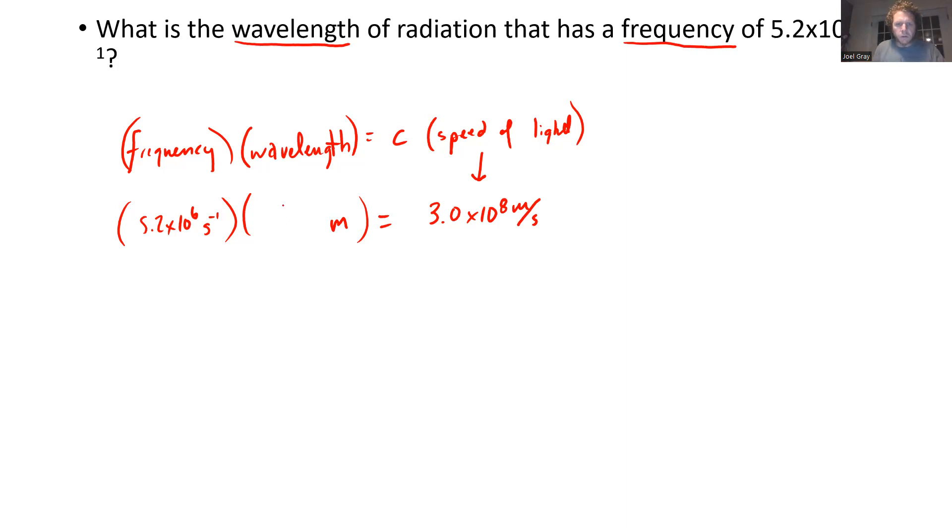So what we want to do, I'm going to go ahead and plug in lambda for my wavelength there. All that I'm going to do is say lambda is equal to 3.0 times 10 to the eighth divided by 5.2 times 10 to the sixth.